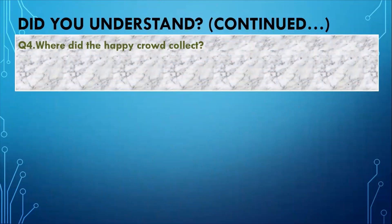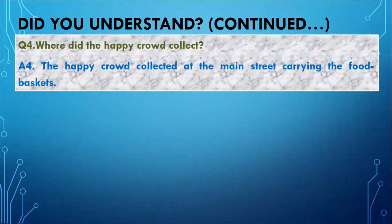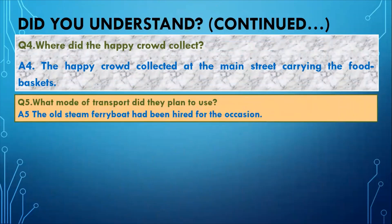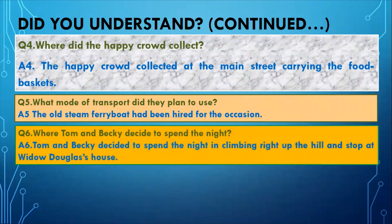Where did the happy crowd collect? The happy crowd collected at the main street carrying food baskets. What mode of transport did they plan to use? The old steam ferry boat had been hired for the occasion. Where did Tom and Becky decide to spend the night? Tom and Becky decided to spend the night climbing up the hill and stopping at Widow Douglas's house.